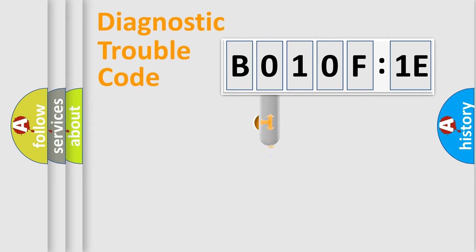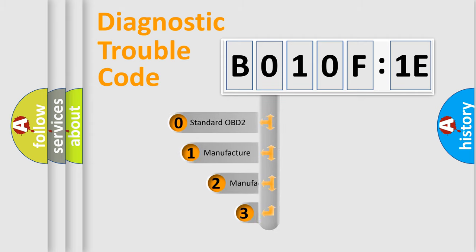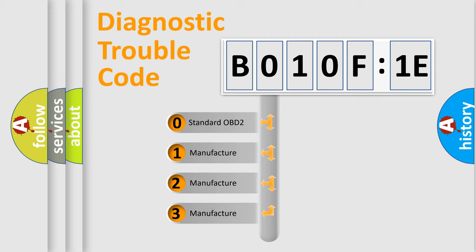This distribution is defined in the first character code. If the second character is expressed as 0, it is a standardized error.